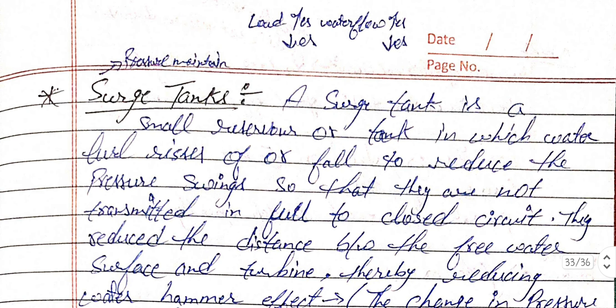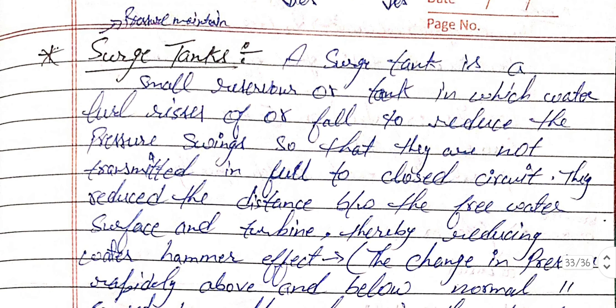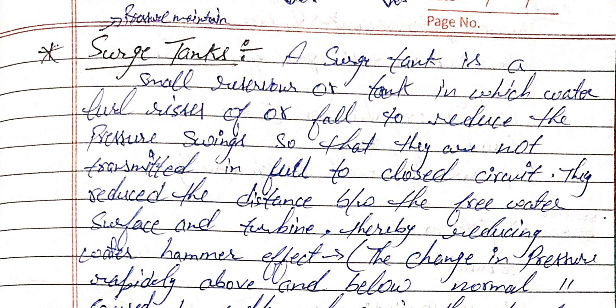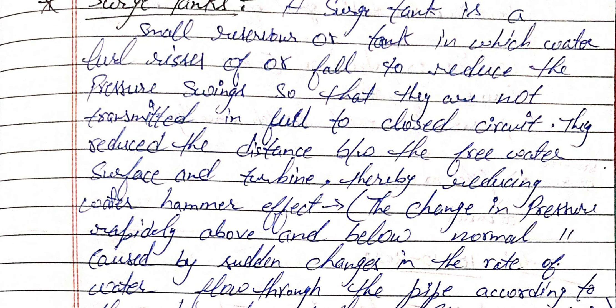The next point is the surge tank. The main purpose of the surge tank is to maintain pressure. A surge tank is a small reservoir or tank in which the water level rises or falls to reduce pressure swings so that they cannot be transmitted in full to the closed circuit. It reduces the distance between the free water surface and the turbine, thereby reducing the water hammer effect.